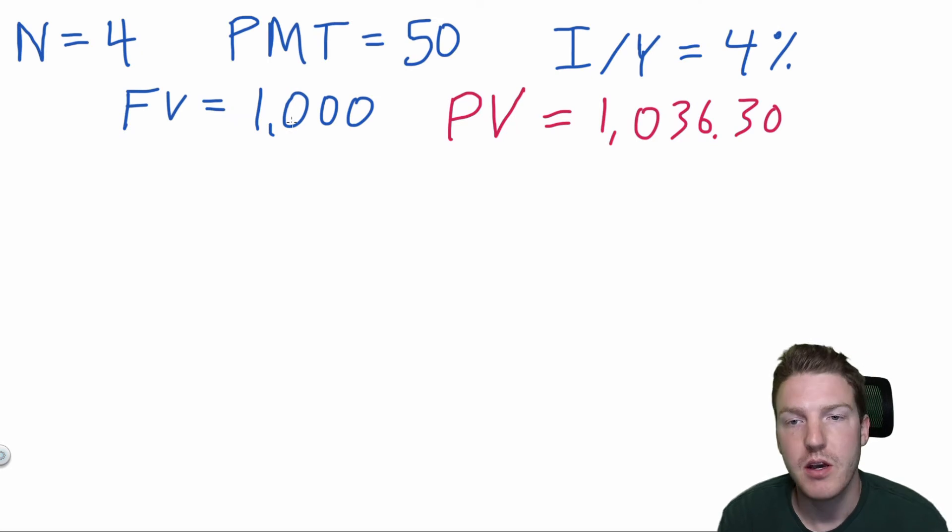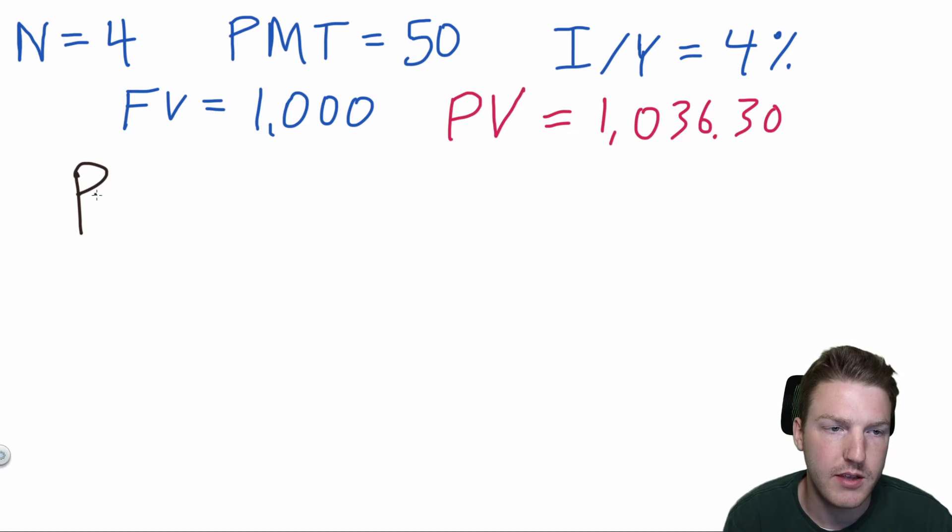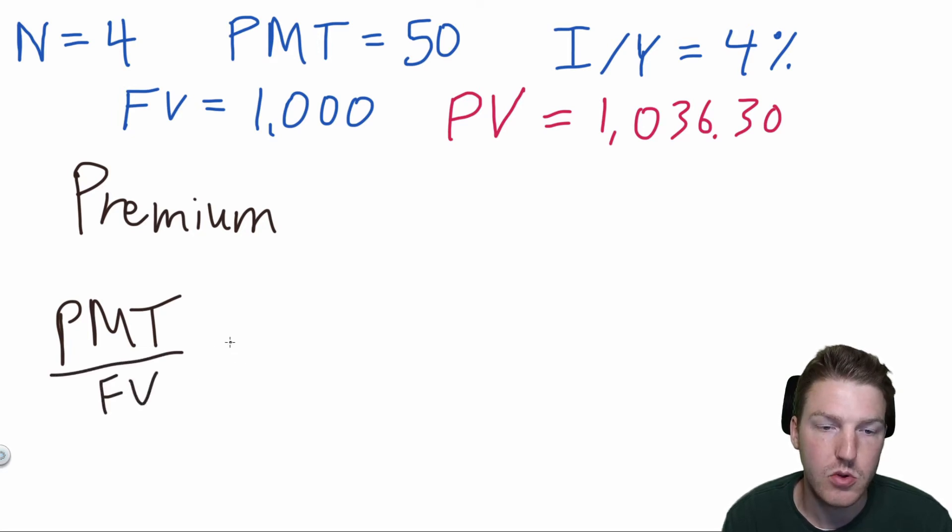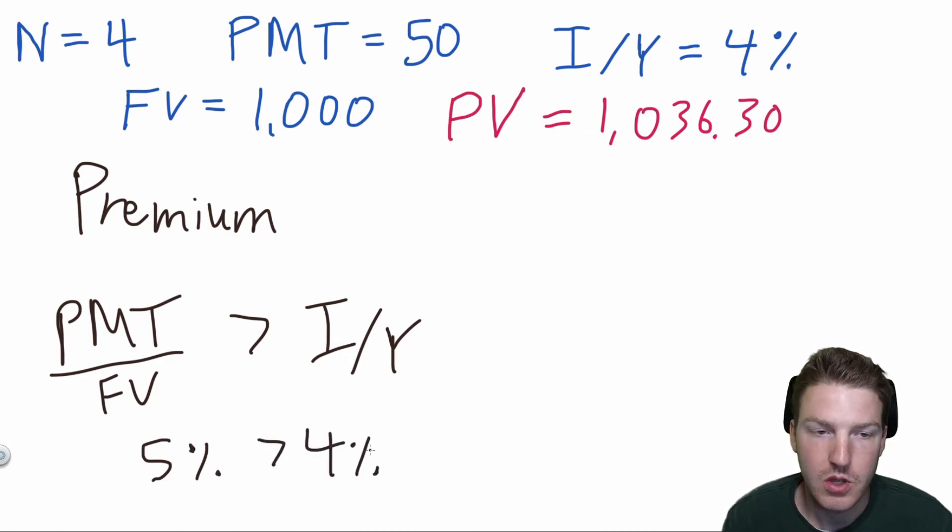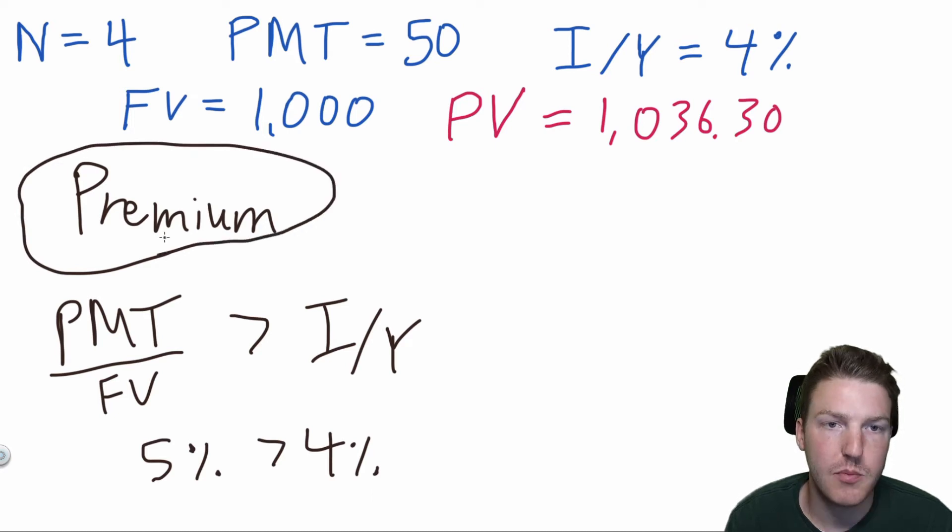One important thing to note is that because the present value exceeds $1,000, we can say that this bond is trading at a premium. And the easy way to tell whether a bond will be trading at a premium is whether the payment rate or the coupon rate, which is the payment divided by the notional or the future value exceeds the interest per year that the market expects. So in this situation, we had a $50 payment, which means that our coupon rate was actually 5%, which is greater than the interest per year, 4%, which means this bond is trading at a premium.